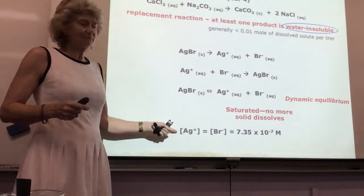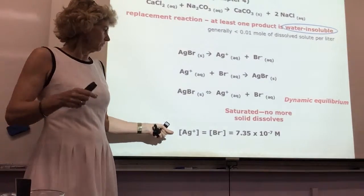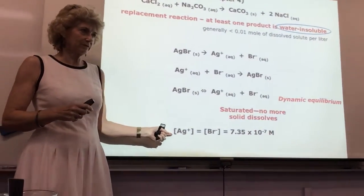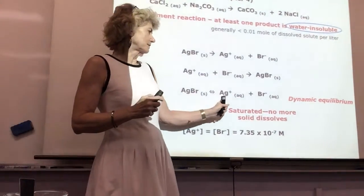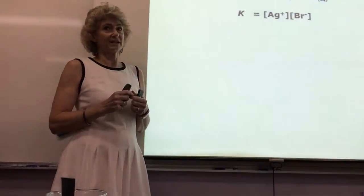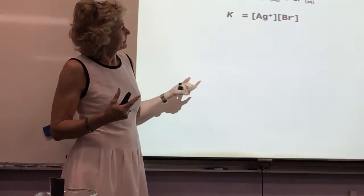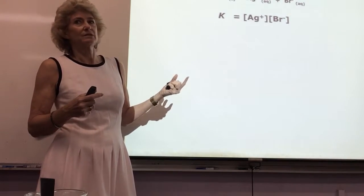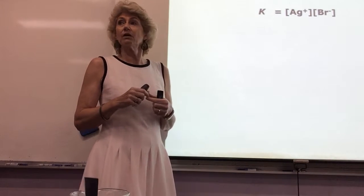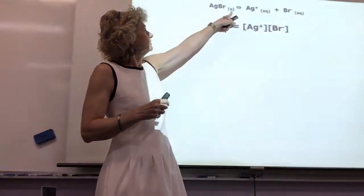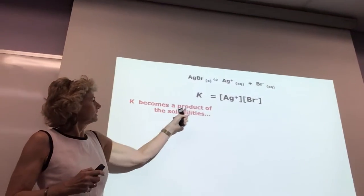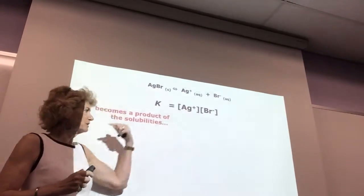For this particular example, if we could measure it and find that the concentration of each ion happens to be 7.35 × 10⁻⁷ molar at 25°C, that means the two concentrations are equal and we can easily find K. So what's wrong with that K expression? It looks like something's missing — there's no denominator, but that's because the reactant is a solid.